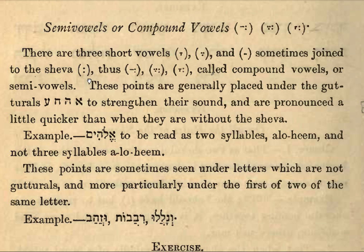Sometimes joined to the shva to give us this more complicated looking affair here: a line with two dots, three dots and two dots, little t and two dots. These are called compound vowels or semi-vowels. They are usually placed under the guttural letters to strengthen their sound, and they are pronounced a little bit quicker than when they do not have the shva.